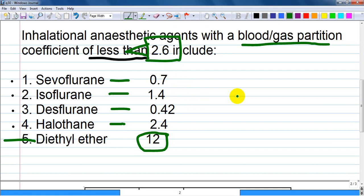Another option is to try to make a different question. If blood gas partition coefficient is less than, for example, 1.5, which answers are correct? So only sevoflurane and desflurane. You can derive any of the conditions from knowing this blood gas partition coefficient.